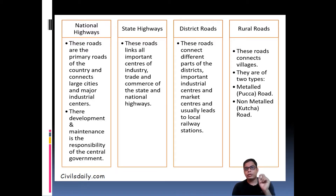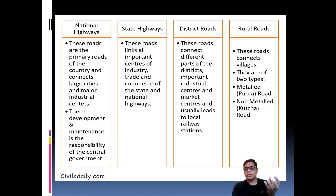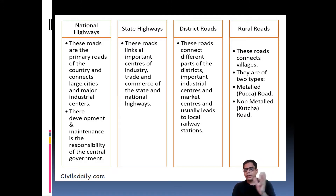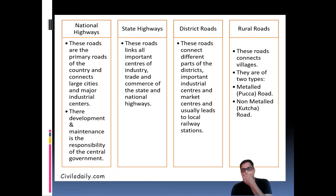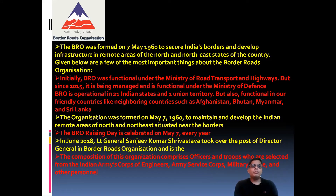District roads connect different parts of a district and link important industrial centers within that district. Rural roads connect villages to each other and usually lead to the local railway station or junction. Rural roads are of two types: metalled roads, known as pucca roads, and unmetalled roads, known as kaccha roads.